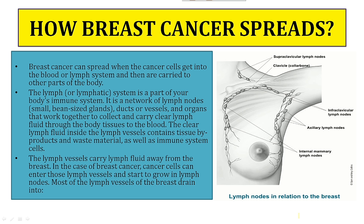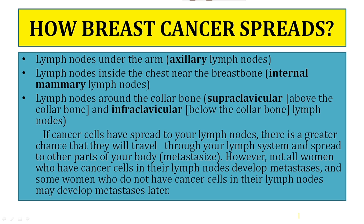The lymph system is a part of your immune system — a network of lymph nodes, ducts or vessels, and organs that work together to collect and carry clear lymph fluid through the body tissues to the blood. The clear lymph fluid inside the lymph vessels contains tissue by-products and waste material, as well as immune system cells. The lymph vessels carry lymph fluid away from the breast. In the case of breast cancer, cancer cells can enter those lymph vessels and start to grow in lymph nodes.